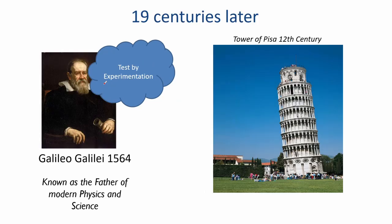Then, 19 centuries later, here comes Galileo Galilei, who was an Italian astronomer, physicist, and engineer, sometimes described as a polymath. He was also known as the father of modern physics and science.